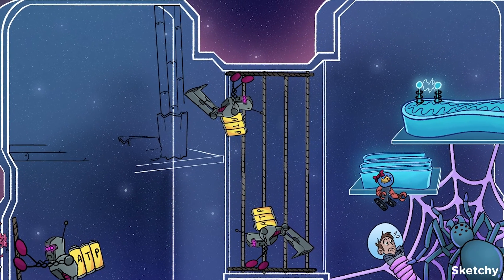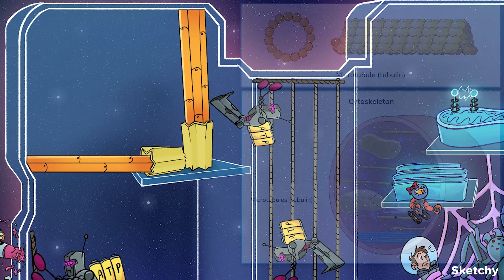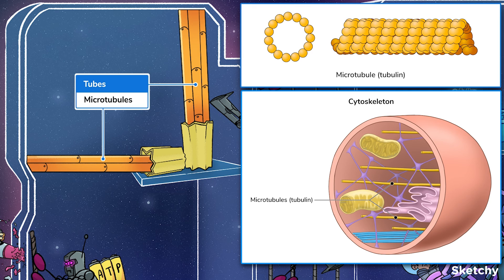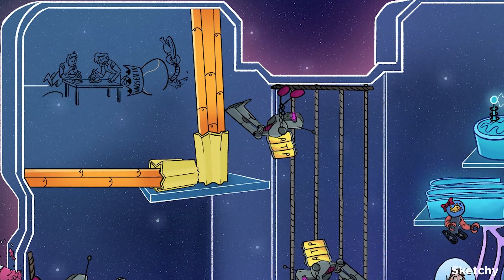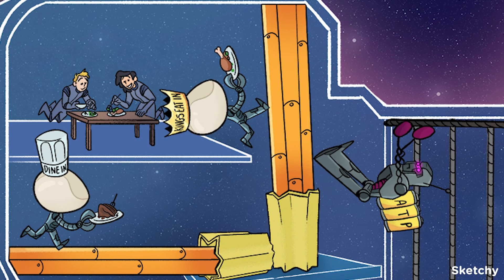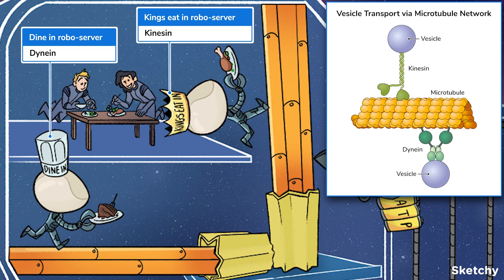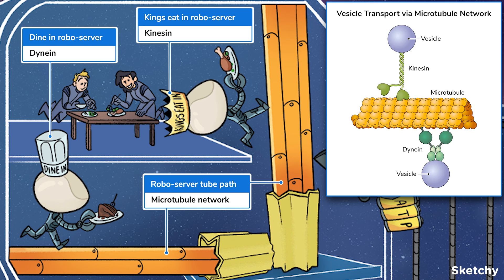Time to tackle the final component of the cytoskeleton — microtubules, which we've represented with these tubes. Microtubules are hollow tubes made of strings of tubulin protein. They are distributed throughout the cytoplasm and help provide structure to the interior of the cell. Microtubules create a network of pathways throughout a cell. Kinesin and dynein, two ATP-using proteins, move along this network in opposite directions to transport vesicles between organelles. In the dining area of the ship, you can see these robo-servers wearing kinesin and dynein hats and transporting food in different directions.